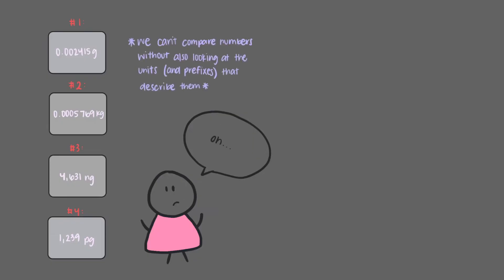If we just look at the numbers without taking the units into consideration, we might think that we would get the biggest nugget of gold if we chose the 4631 nanogram nugget, since 4631 is the biggest number on our list. But that doesn't really give us the full picture. We can't just compare numbers without also looking at the units or the prefixes of those units that describe them.